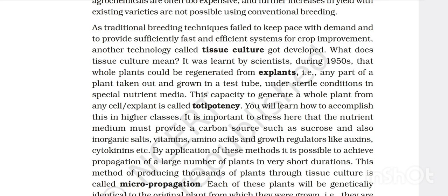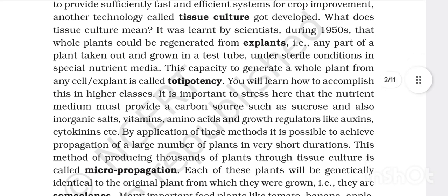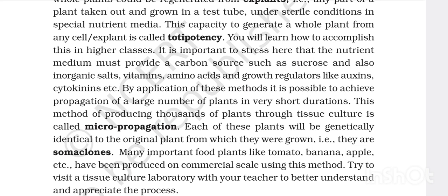The nutrient medium must provide a carbon source such as sucrose, inorganic salts, vitamins, amino acids, and growth regulators like auxins and cytokinin — which are very important as they help in the growth of roots and shoots of newly developed plants. This method allows propagation of a large number of plants in a very short duration.